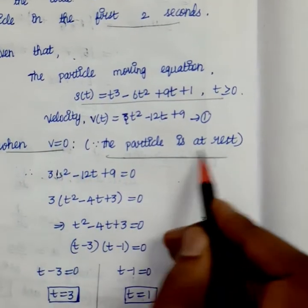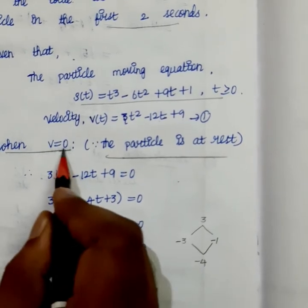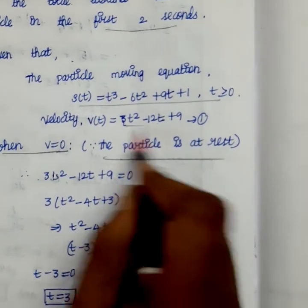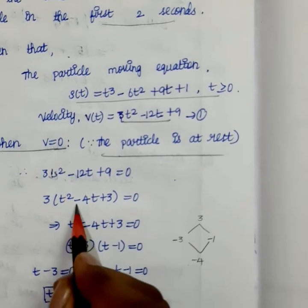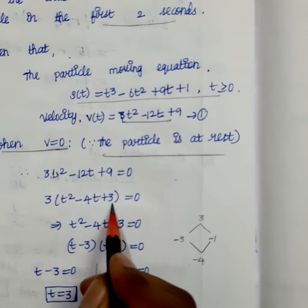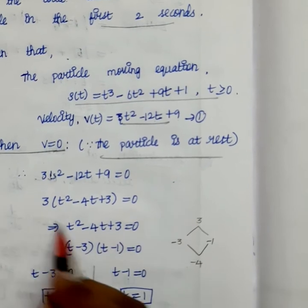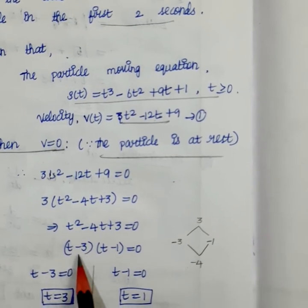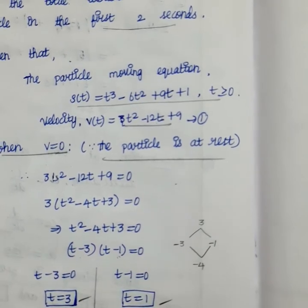When the particle is at rest, velocity equals 0. So set v(t) = 0: 3t² - 12t + 9 = 0, which simplifies to t² - 4t + 3 = 0. Factoring: multiply to get 3, add to get -4, giving factors (t - 3)(t - 1) = 0. Therefore t = 3 and t = 1.